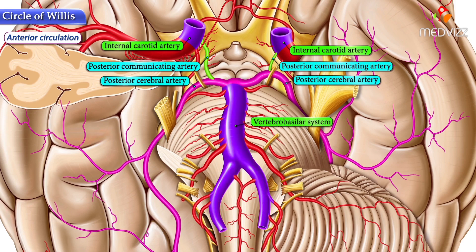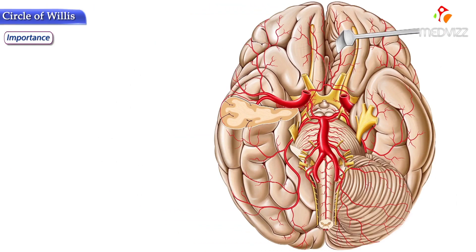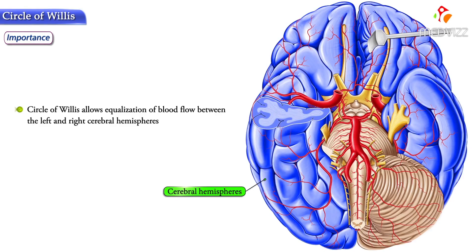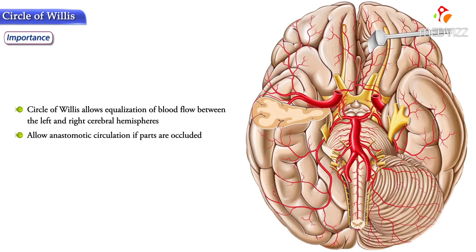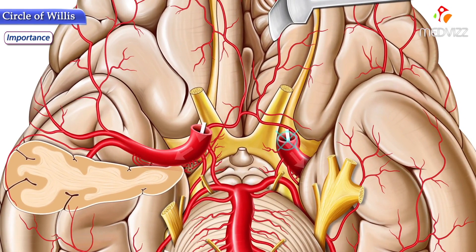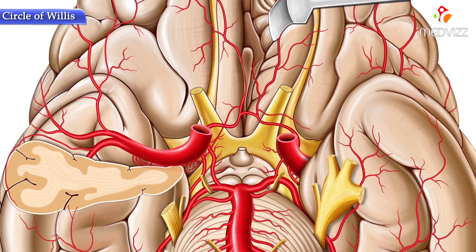The importance of the Circle of Willis is as follows. The circle allows equalization of blood flow between the left and right cerebral hemispheres and can allow anastomotic circulation if parts are occluded. That is, the circle serves as a backup or bypass system, allowing an alternative route if there is an occlusion in the normal route. For example, if there is an obstruction of blood supply through the internal carotid artery, blood will be routed to that area through the anterior communicating artery from the right internal carotid artery.